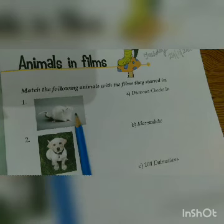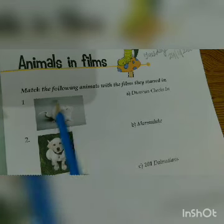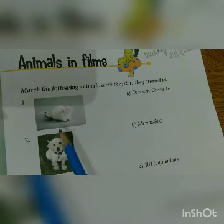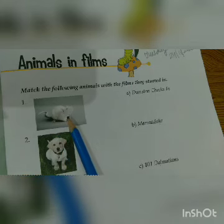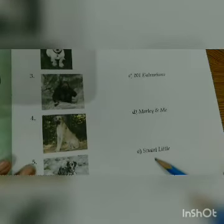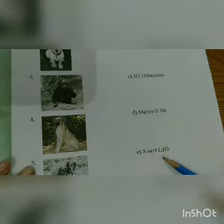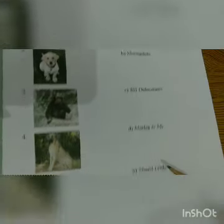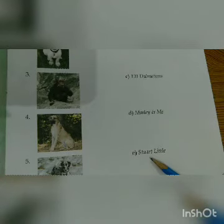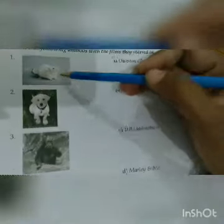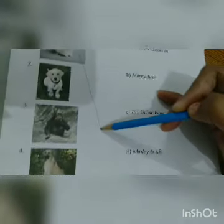Look at this picture. Whose picture is this? This is a little mouse picture. And this mouse's name in the film is Stuart Little. Have you seen the Stuart Little film, children? Yes, it's a Hollywood movie. In this movie, the small little mouse's name is Stuart Little. So match number one with E.